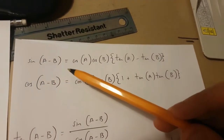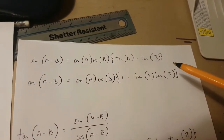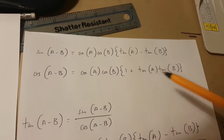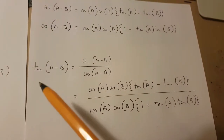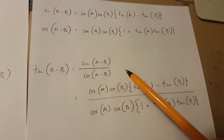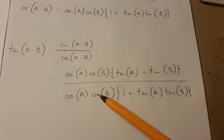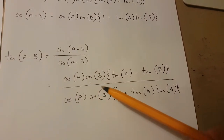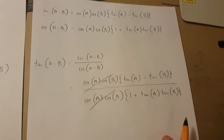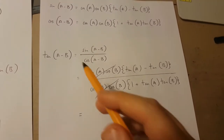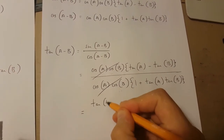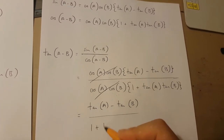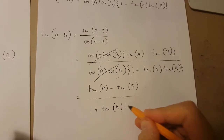Now, if sin(A minus B) equals cos A cos B times (tan A minus tan B), and cos(A minus B) equals cos A cos B times (1 plus tan A tan B), then tan(A minus B), which is sin(A minus B) over cos(A minus B), gives us this. Because we've got cos A cos B on top and below, they cancel each other out, and what we're left with is tan(A minus B) equals tan A minus tan B over 1 plus tan A tan B.